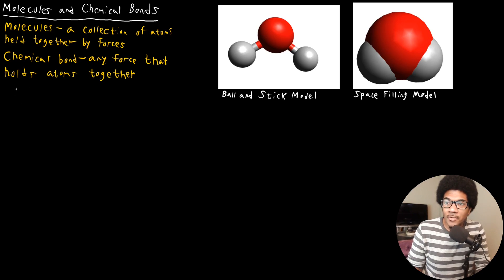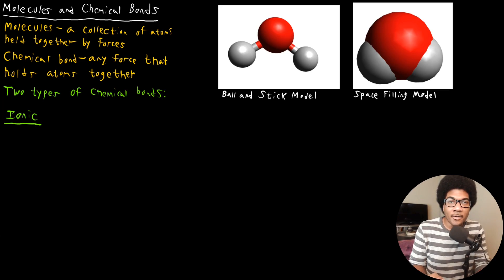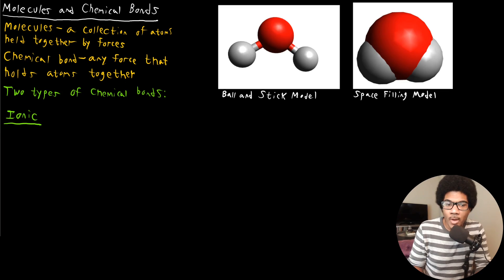There are two types of chemical bonds that you should be familiar with. The first one is called the ionic bond. An ionic bond is when you have two atoms that have opposite charges — they have net charges. One has a net positive and one has a net negative charge, and those opposite charges are what hold them together. Those electrostatic forces are what hold those two atoms together, so an ionic bond is the attractive force between two oppositely charged atoms.